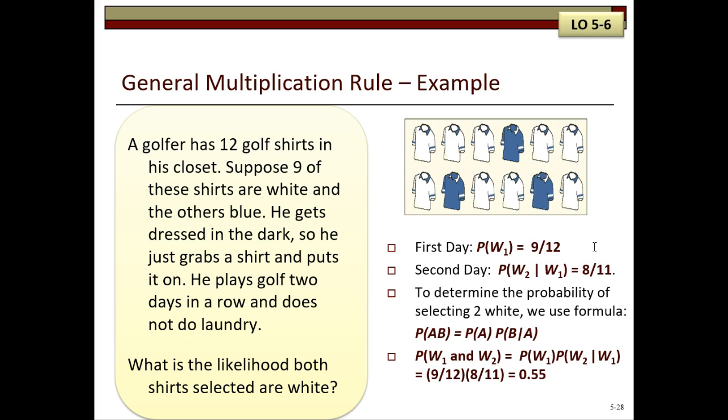So let's take a look over here. The first day he has 9 white shirts out of 12. So the probability of getting a white shirt is 9 out of 12. The second day, he has 1 less shirt and he has 1 less white shirt. So the probability of getting a white shirt now is 8 out of 11.